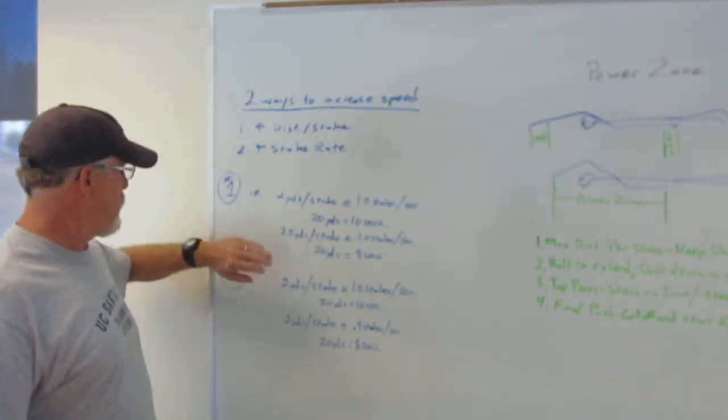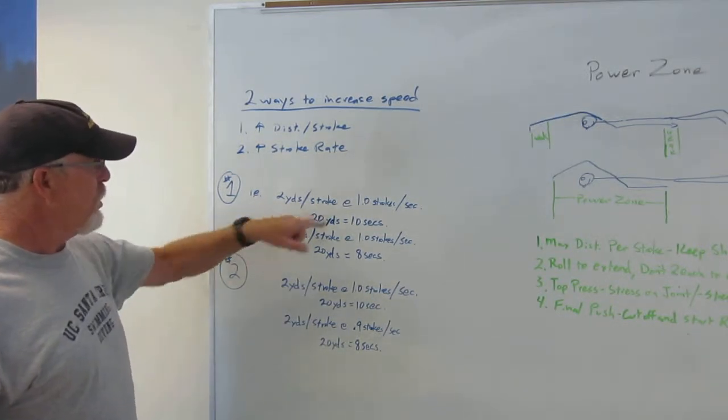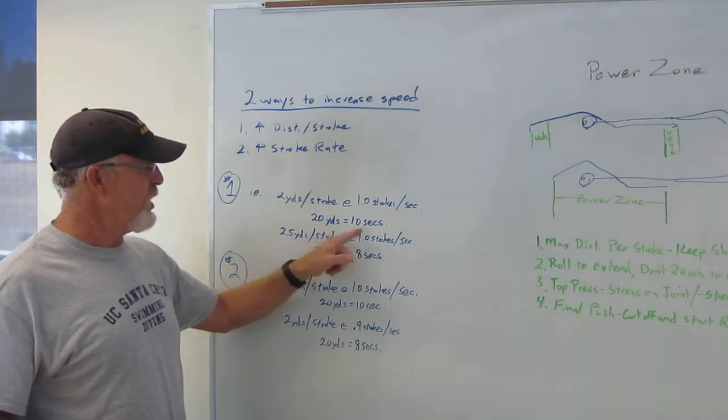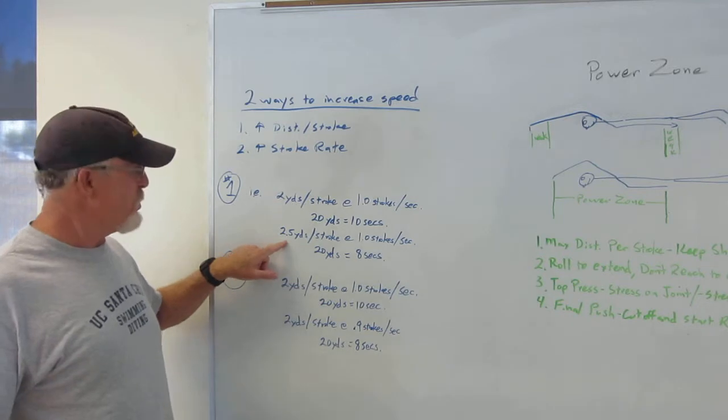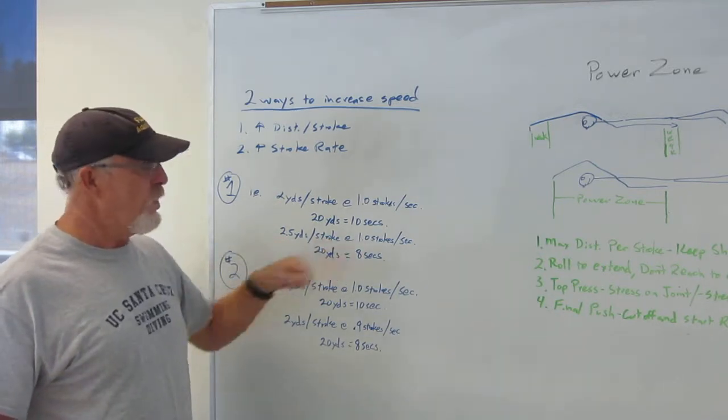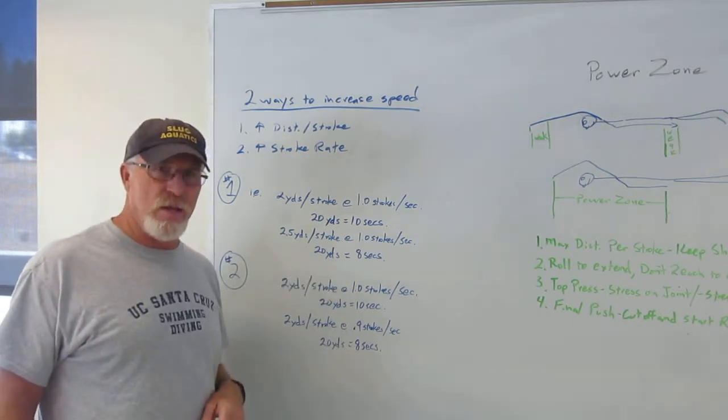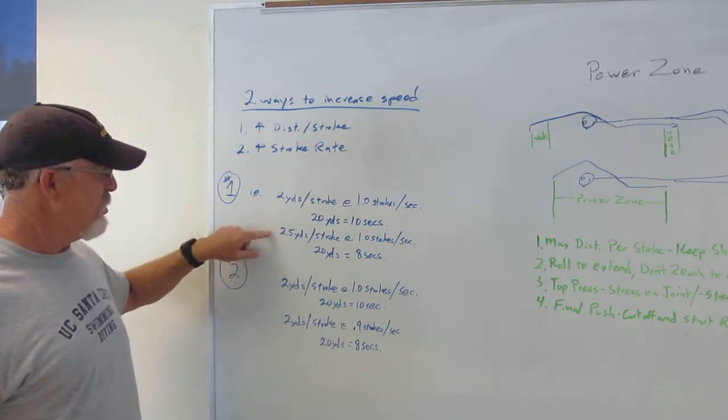To give you an example of that is if you go two yards per stroke at one stroke per second, it'll take you 10 seconds to go 20 yards. If you can increase your distance per stroke from two yards to 2.5 yards per stroke at one stroke per second, you'll cover that 20 yards in eight seconds. So there's really an advantage of being able to lengthen your stroke.